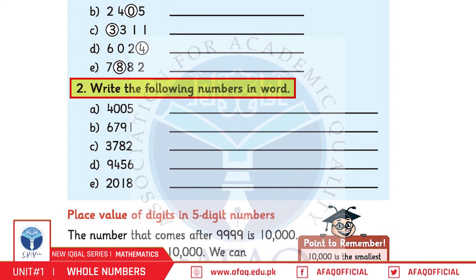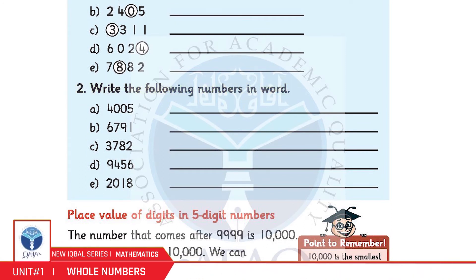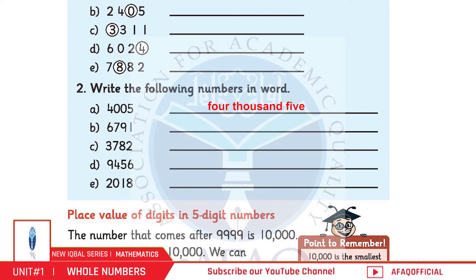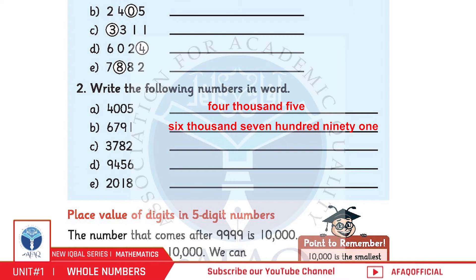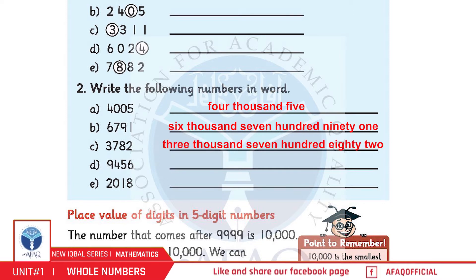Question 2: Write the following numbers in words. A: 4005. B: 6791. C: 3782.